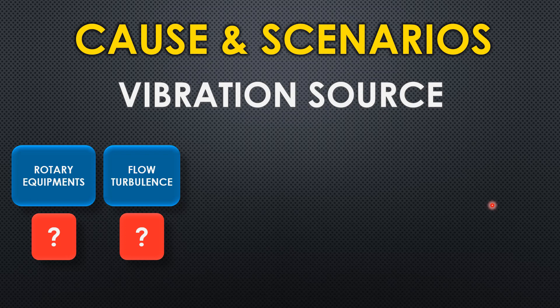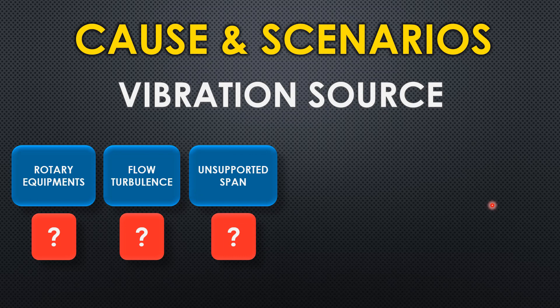Generally the first step to minimize flow turbulence is process design, then mechanical design. The third vibration source is unsupported span. If your line is not supported properly, you can expect vibration in that portion because the span of a piping system is calculated based on various factors including vibration. If you don't provide pipe support at appropriate span intervals, the pipe will move where it is unsupported.